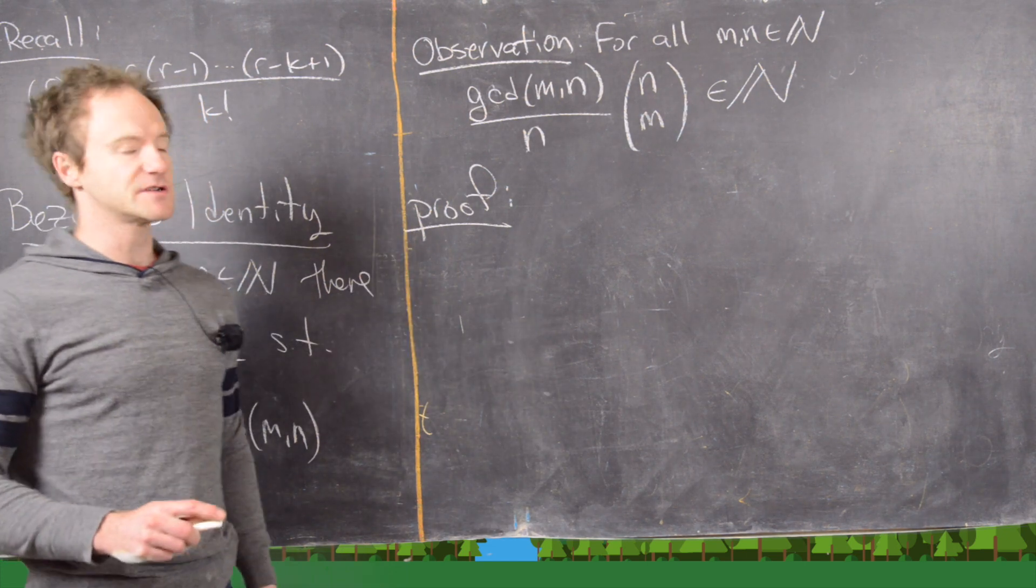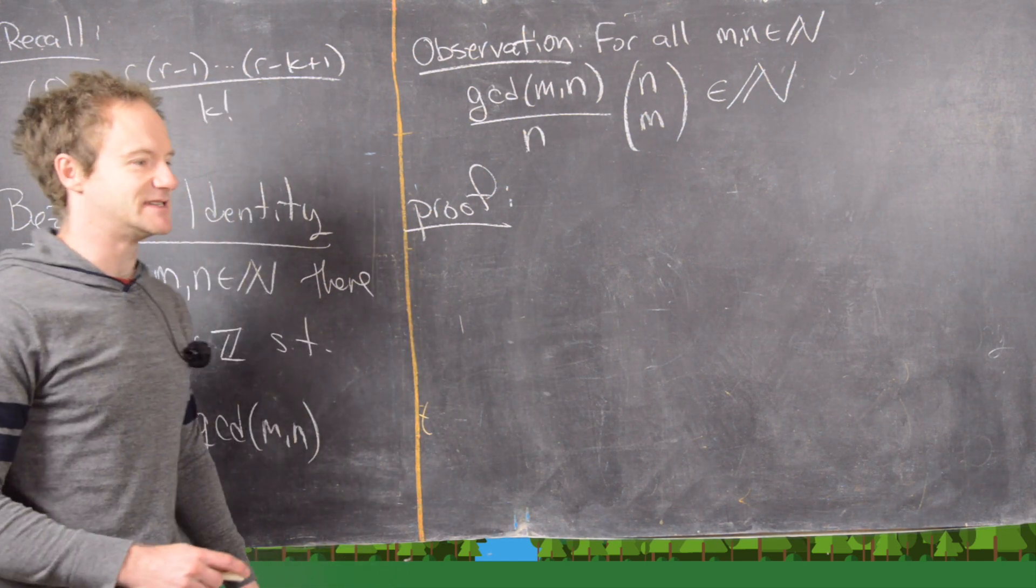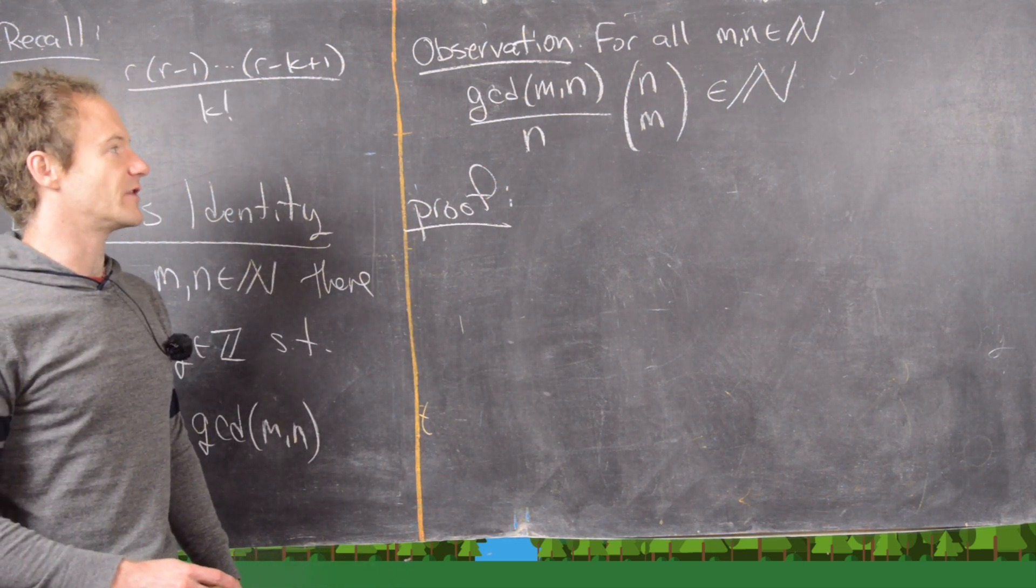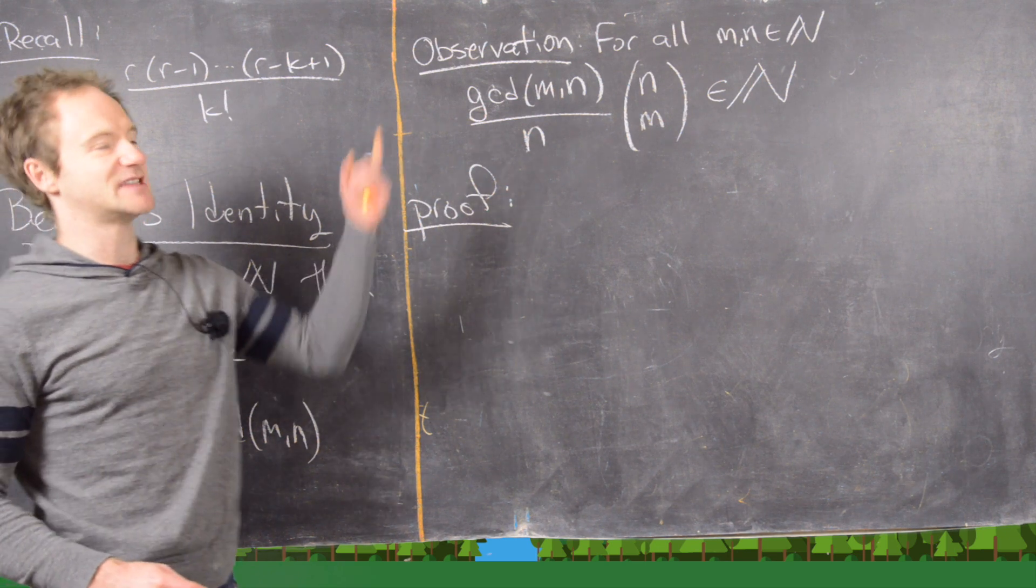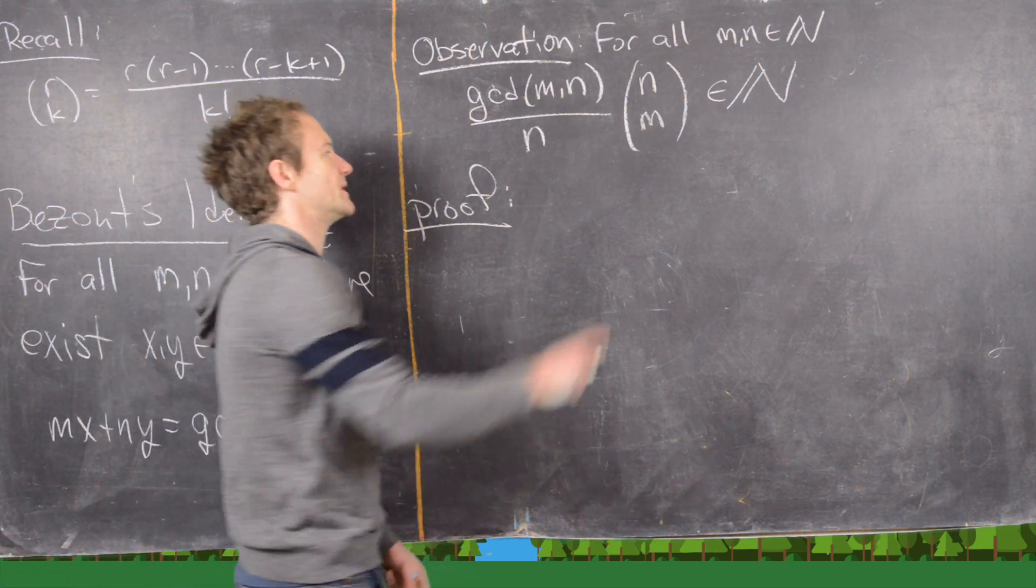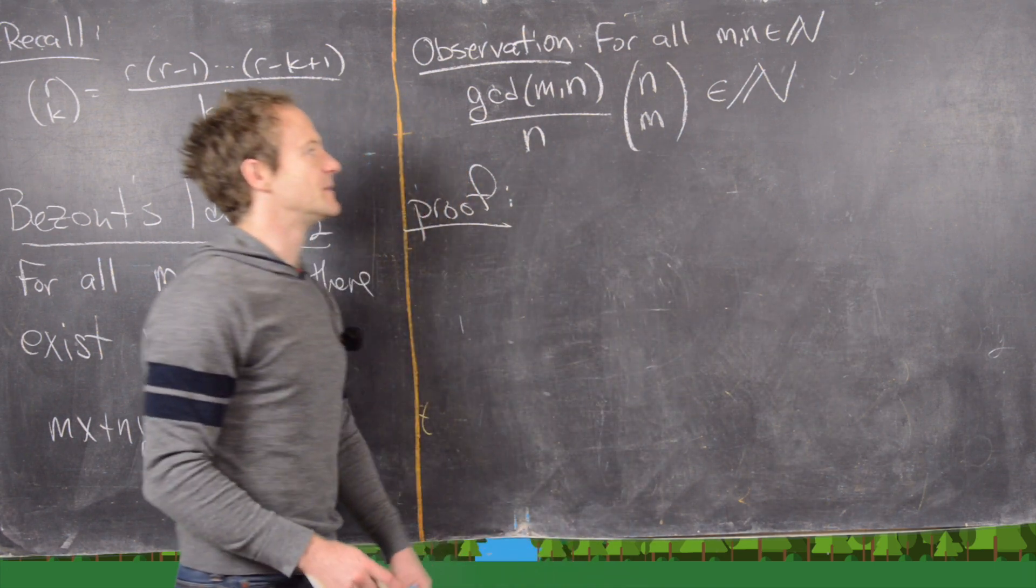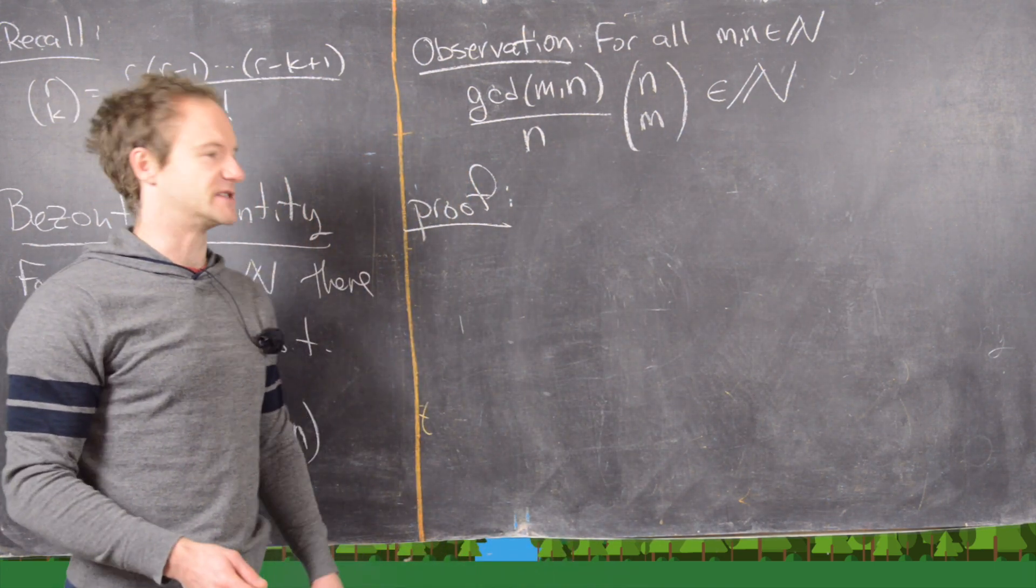So maybe the first thing to notice is that it's most definitely bigger than or equal to 0. I guess I should say the natural numbers including 0 because if m is bigger than n, then this is going to be equal to 0.